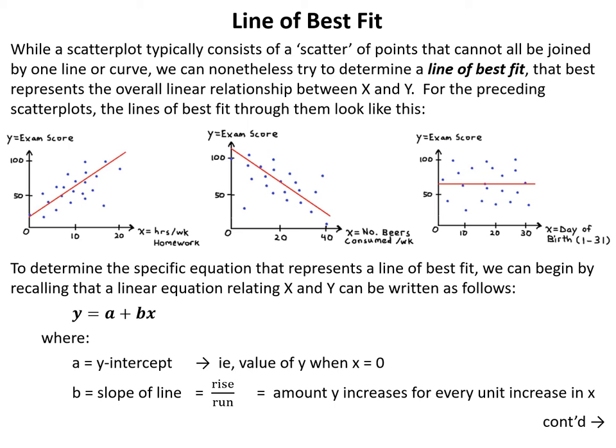While a scatter plot typically consists of points that cannot all be joined by one line or curve, we can determine a line of best fit that best represents the overall linear relationship between x and y. For the preceding scatter plots, the lines of best fit are shown in red going through the points.